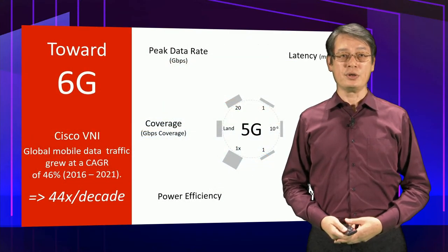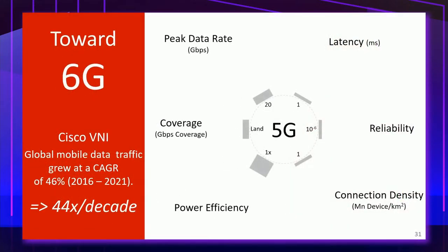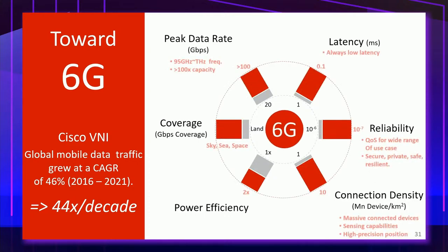Moving towards 6G, according to Cisco's VNI Index, global mobile data traffic grew at a compound annual growth rate of 46% in the past five years. If we extrapolate using the same rate, ten years from now, mobile data traffic will be 44 times today's level. This implies unprecedented stringent performance requirements for the next-generation network. For example, achieving hologram display user interfaces would require probably greater than 100 gigabits per second of ultra-fast data transmission, and sub-terahertz devices might be needed to provide sufficient bandwidth.